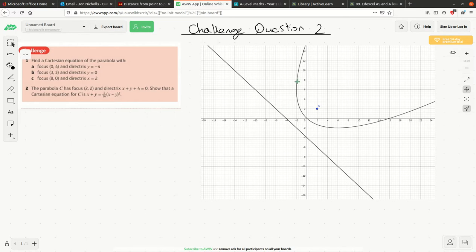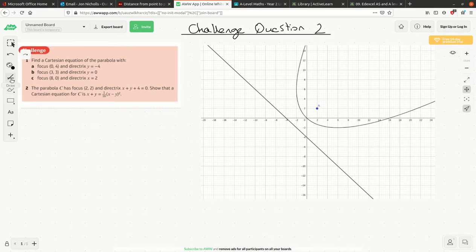What I'm going to do is I'm going to take a general point on this line, and I'm going to call the coordinates x, y. And then I'm going to write down the equation of the directrix, it was x plus y plus 4 equals 0.